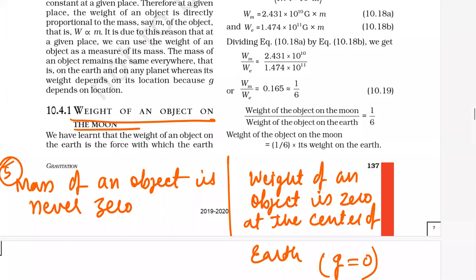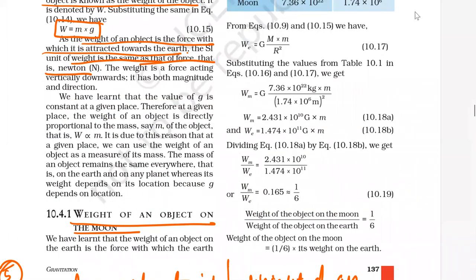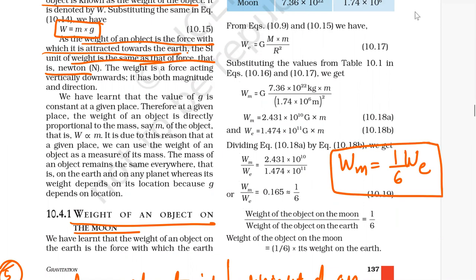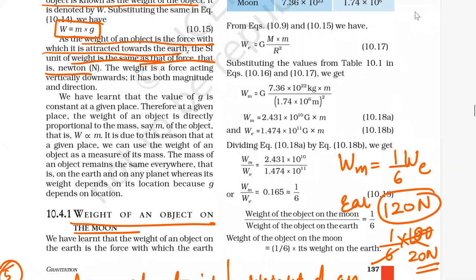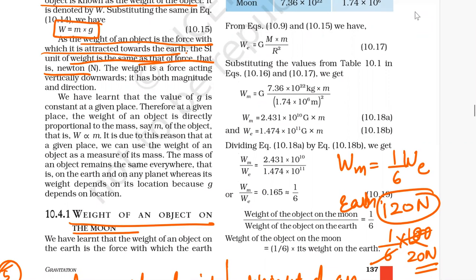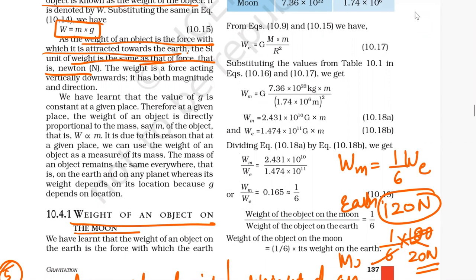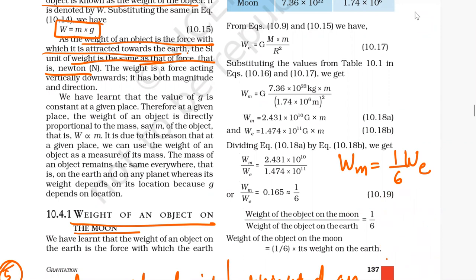Weight of an object on the moon is 1/6 the weight of the object on earth. For example, if some object's weight is 120 newton on earth, then on the moon it will be 1/6 of that, which is 20 newton.